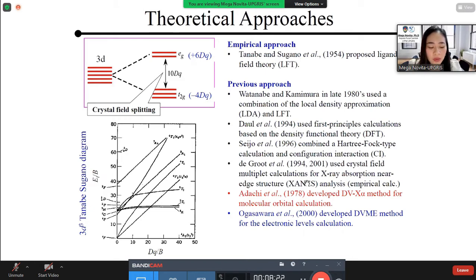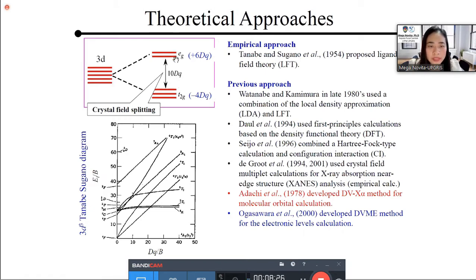For the interpretation of optical properties and the multiplet energies, many approaches have been used. For example, the empirical approach, Ligand field theory proposed by Tanabe Sugano. In the octahedral crystal field, three d orbitals split into two degenerate levels called EG and T2G, which is the energy splitting between them called as crystal field splitting or 10Dq. And their multiplet energies has been summarized and known as Tanabe Sugano diagram.